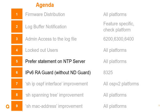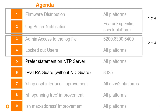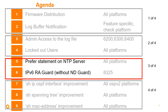Here is the agenda. Nine features have been identified as usability features for the CX 10.09 release. We covered features one and two in the first two presentations, so do look at those — you can watch them out of order. This session covers the prefer statement on the NTP server and IPv6 RA guard. Number four of four covers improvements to the show output on specific AOS CX features.